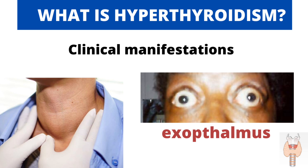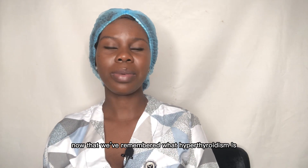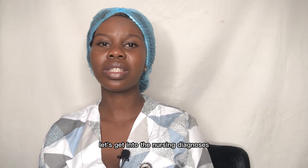Hyperthyroidism has a lot of clinical manifestations, like a hypermetabolic state of the body. The two clinical manifestations I'm discussing in this slide will inform some of the nursing diagnoses we'll be working on today. A person with hyperthyroidism will have the thyroid gland enlarged, so their neck will bulge out. They could also have their eyes bulging out — a state known as exophthalmos.